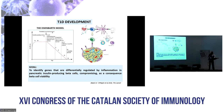According to the Eisenbarth model of type 1 diabetes, there is a silent phase in which there are no symptoms of the disease. Afterwards, there is a triggering event—such as an infection or an inflammatory stimulus—that marks the starting point of beta cell destruction, until most of the beta cells are dead.